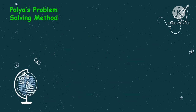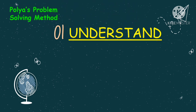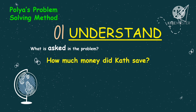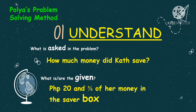Let us now solve the problem using the first step, which is to understand. We have to know what is asked in the problem. Based on the problem, we are looking for how much money did Cass save? The given numbers are 20 pesos and three-fifths of her money in the saver box.